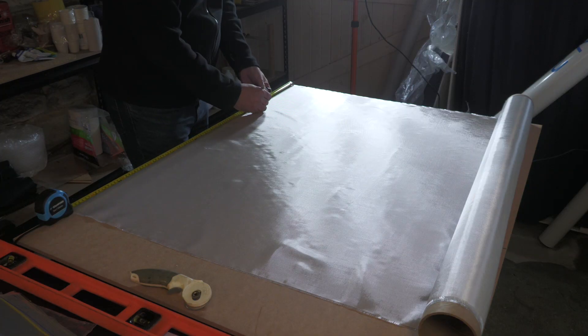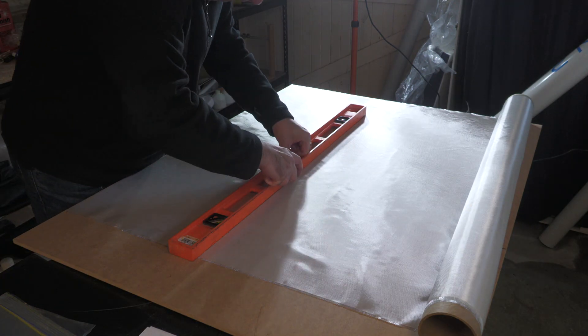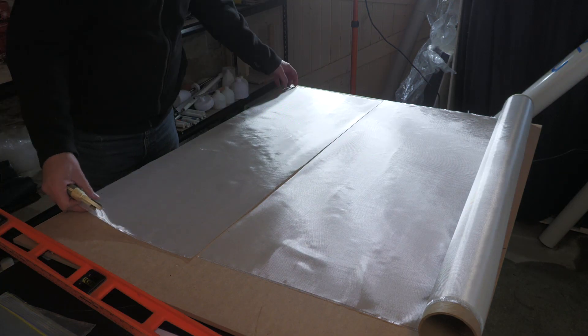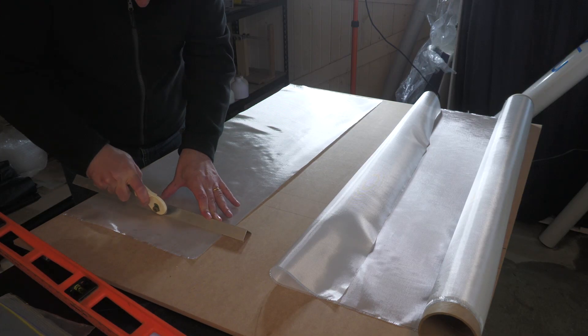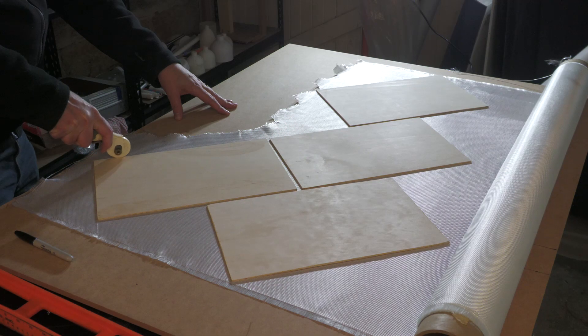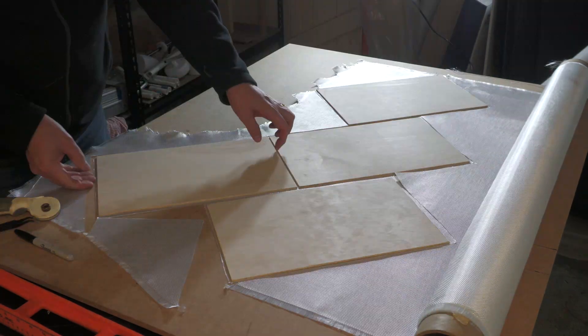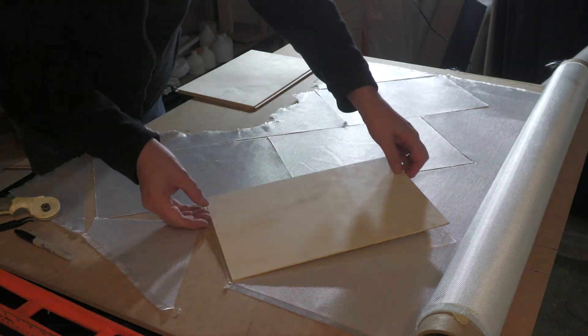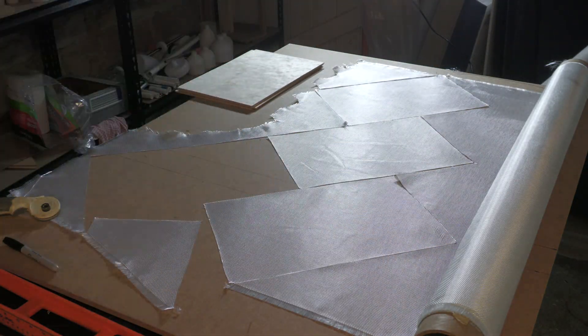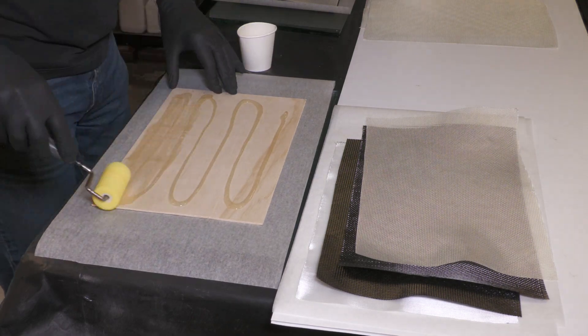Originally we were going to make up one spare fin but in the end we decided to just make up the three. We cut up both fiberglass as well as carbon fiber layers and alternated the weave direction for a stiffer fin. It was just a matter of pouring on the epoxy and then rolling it out with a foam roller.